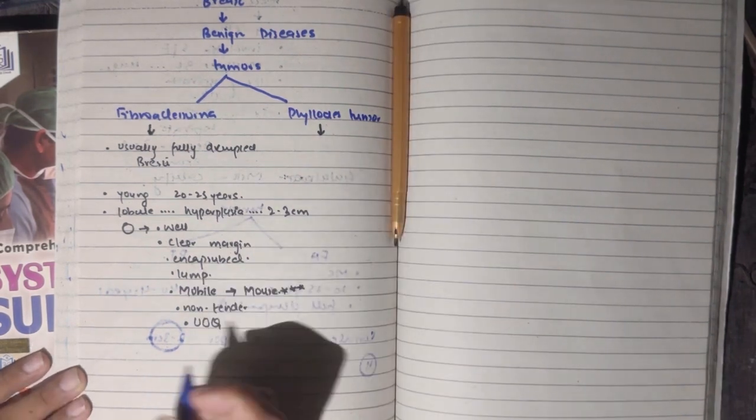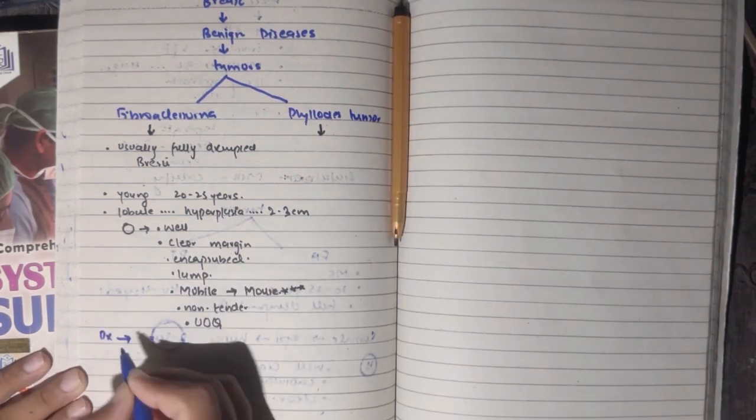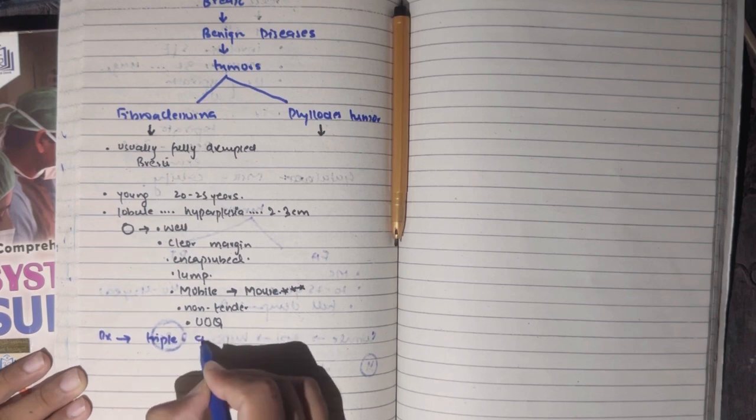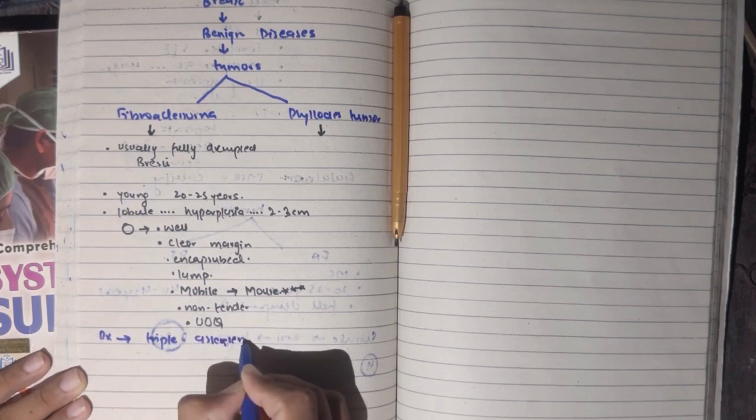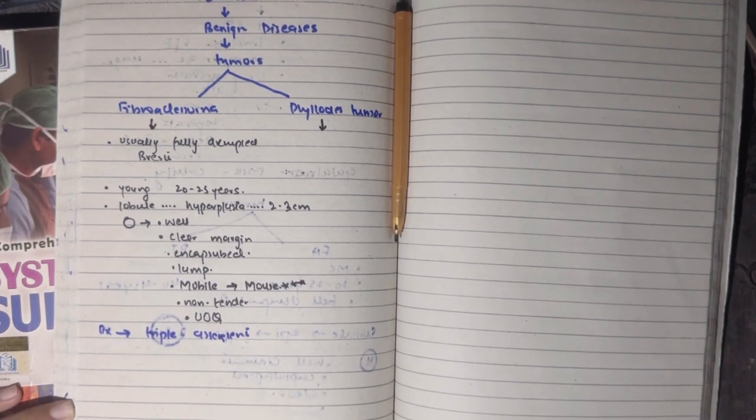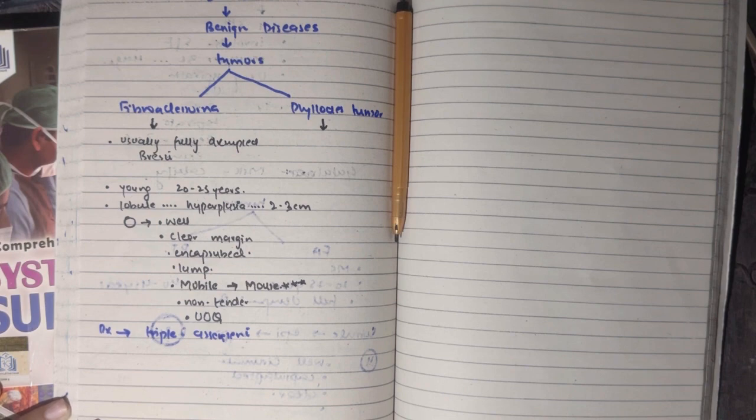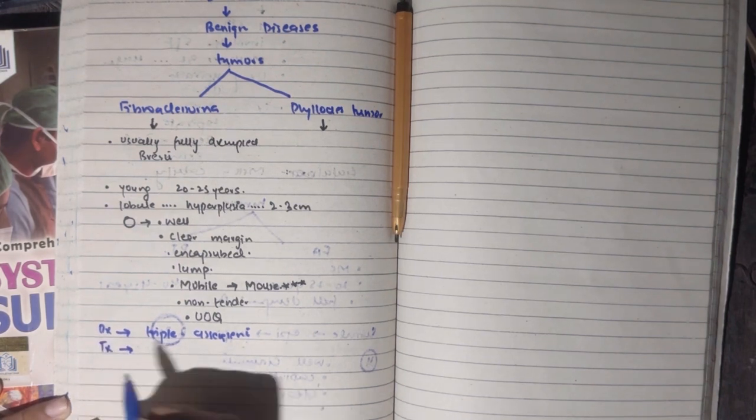Now we do the diagnosis of fibroadenoma. We follow the triple assessment - history and examination. But to confirm we can do mammography or ultrasound, usually ultrasound because it is young female or high risk. If there is family history of breast cancer, then we will do ultrasound. If high risk, then we will go to mammography.